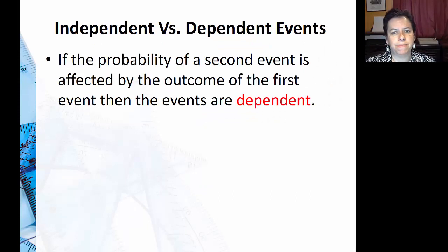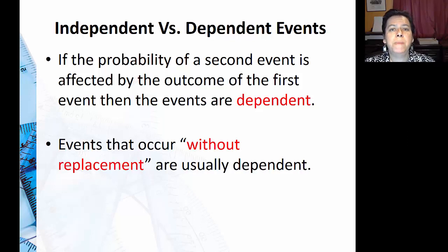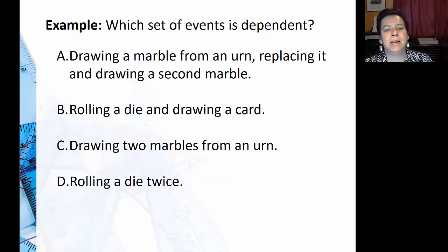That's changing the probability for the second thing. The most common example of that is when we have events that occur without replacement, and I'll explain what I mean there.